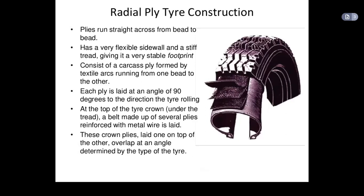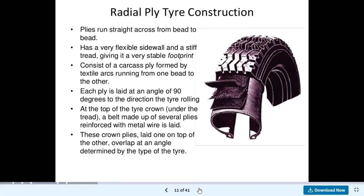Looking at this diagram: the radial tyre consists of a curved carcass ply formed by textile arcs running from one bead to the other. Each ply is laid at an angle of 90 degrees to the direction of the tyre rolling. At the top of the tyre crown, under the tread, a belt made up of several plies reinforced with metal wire is laid. Reinforcement is used to increase the strength at a particular region. This crown ply is laid one on top of the other, overlapping at an angle determined by the type of the tyre.